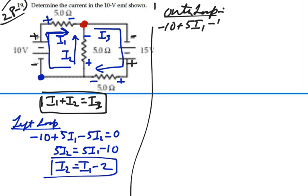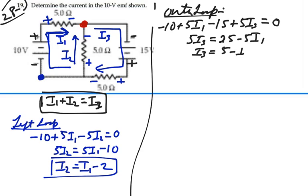So if I go around to the right I got negative 15 plus 5I3 equals 0. So that means that 5I3 is equal to 25 minus 5I1, or I3 is equal to 5 minus I1.